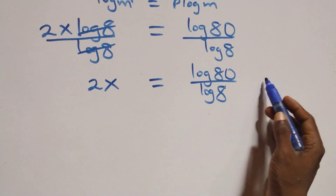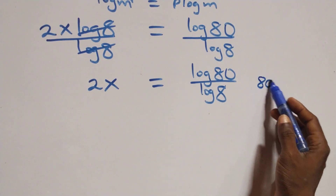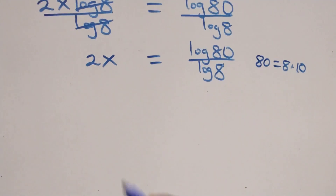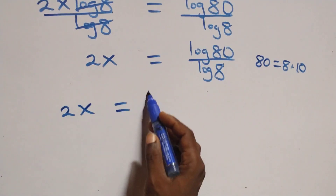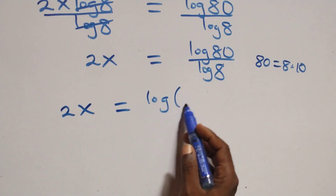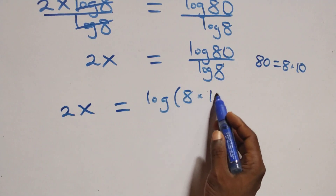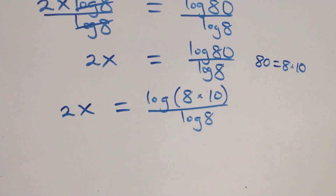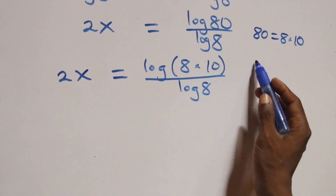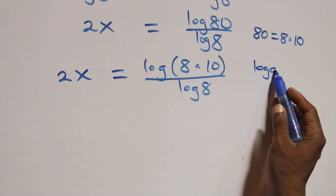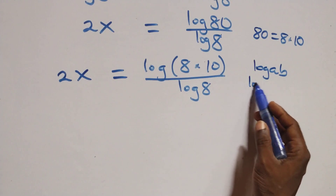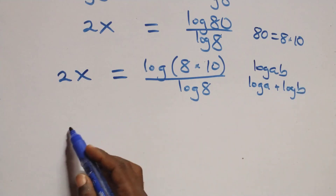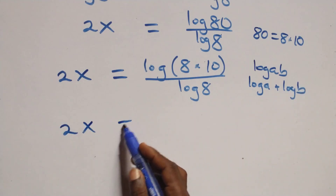The next step: we can express 80 as 8 times 10, which implies we have 2x equals to log of (8 times 10) over log 8. Then this follows the log product rule: log of a times b is the same thing as log a plus log b.